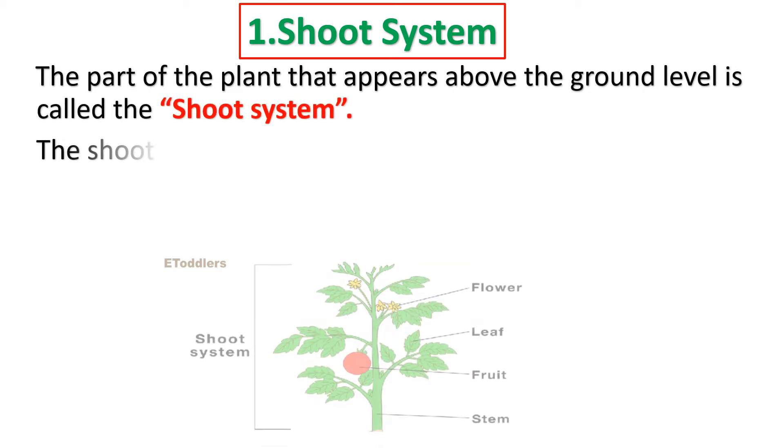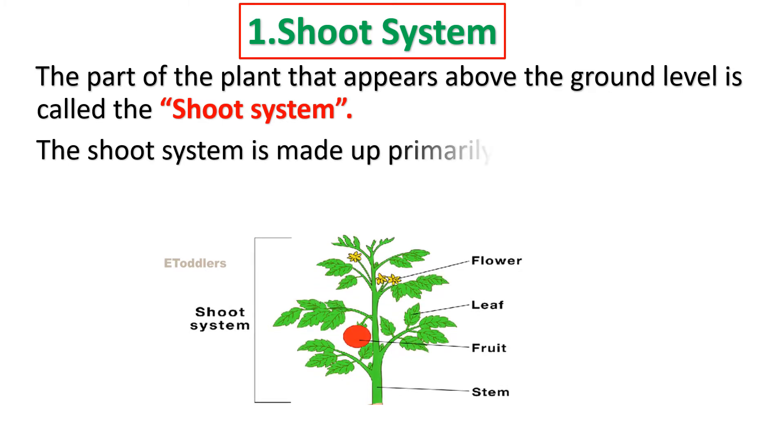The shoot system is made up primarily of leaves, stems, flowers and fruits.